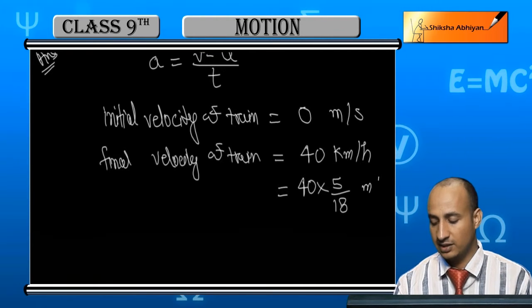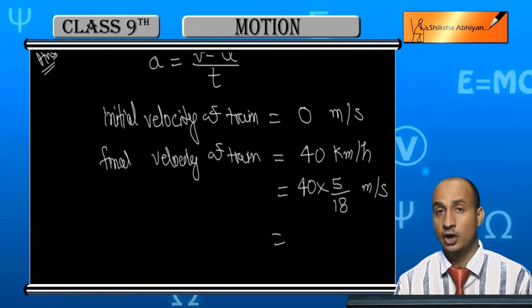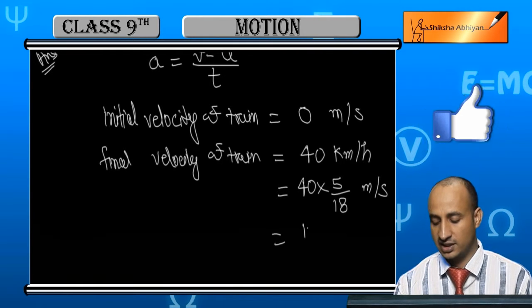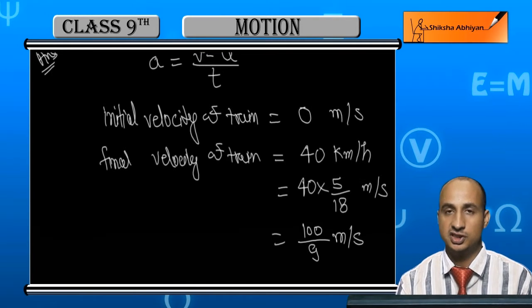And here in meter per second, if you divide by 2 then how much? 20. And in 25 how much? This is 100 upon 9 meter per second. This is the final velocity.